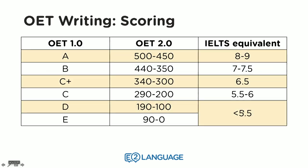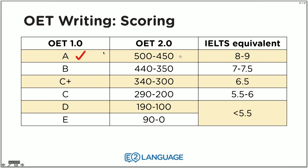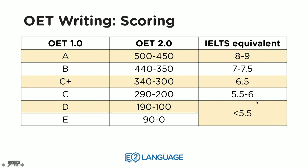This is OET writing scoring. Here is the new scoring system — OET 2.0. The old scoring system was A, B, C plus, C, D, E. The new scoring system goes from 500 down to 0, and you can compare it to the IELTS equivalent. An old A is now 450 to 500, which is the equivalent of an IELTS 8 or 9 — a very high level. Most of you will be aiming for a B, which is between 350 and 440, equivalent to an IELTS 7 to 7.5 — this is achievable. C plus is a score between 300 and 340, equivalent to an IELTS 6.5. Anything below that you probably don't want.